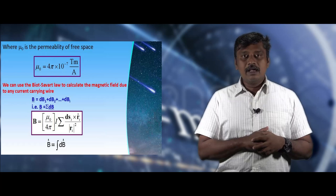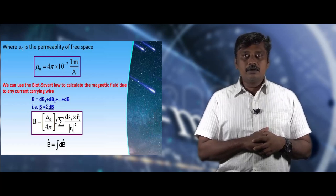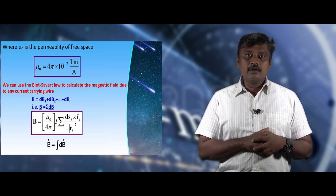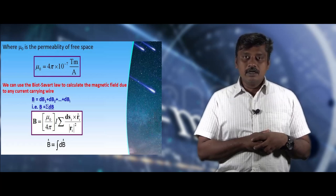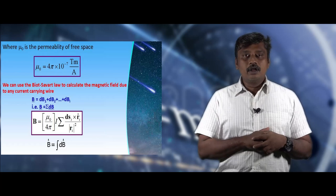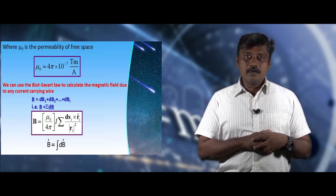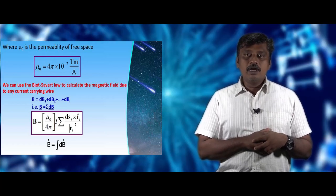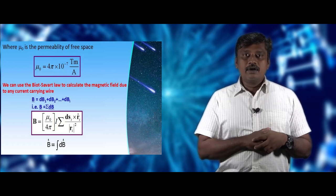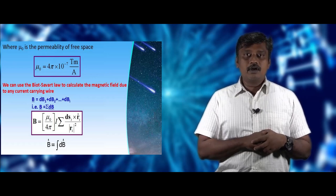Since dB is a vector quantity, it is possible to express the magnetic induction due to the small current element in vector notation. We can write dB⃗ = (mu₀ / 4π) · I·ds⃗ × r̂ / r². Here r̂ is the unit vector along the line joining the point and the current element. We can replace r̂ by r⃗/r, so dB⃗ = (mu₀ / 4π) · I·ds⃗ × r⃗ / r³. This is the vector notation of magnetic induction due to the small current element.